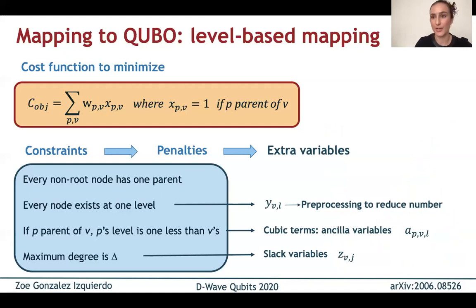When we do this, we will end up with a few extra variables. So for example, from the penalty that every node exists at one level, we will get y variables where y_v,l is one if v is in level l. From the constraint that if p is the parent of v, p's level is one less than v, we'll end up with several cubic terms, which we cannot directly input into D-Wave, so we will need to use ancilla variables to turn them into quadratic terms that we can use. And then from the constraint that the maximum degree can be delta, we will end up with some slack variables z_v,j, which are one when the node v has j children.